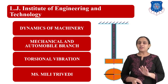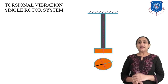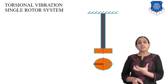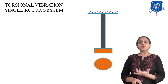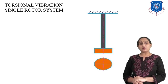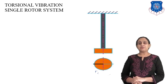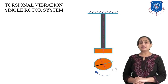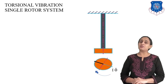Let us see how torsional vibration can occur. In this diagram, there is a shaft and a rotor attached at the base of the shaft. If we twist the rotor and release it, it will rotate and create vibration in a to-and-fro motion. This is known as single degree of freedom torsional vibration.